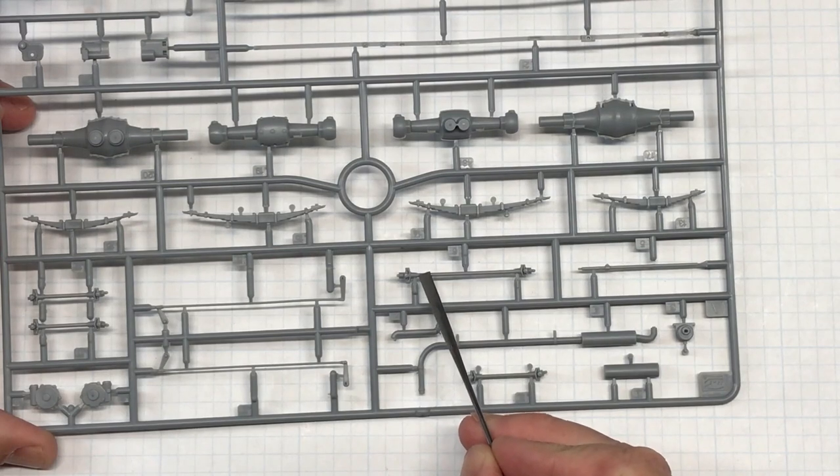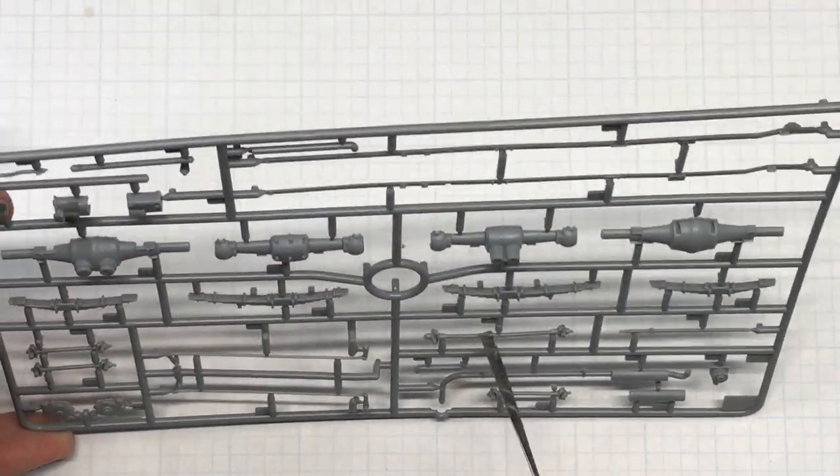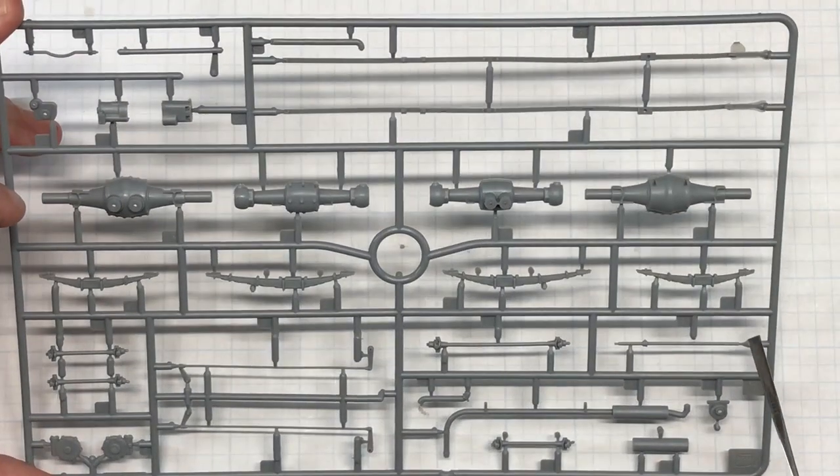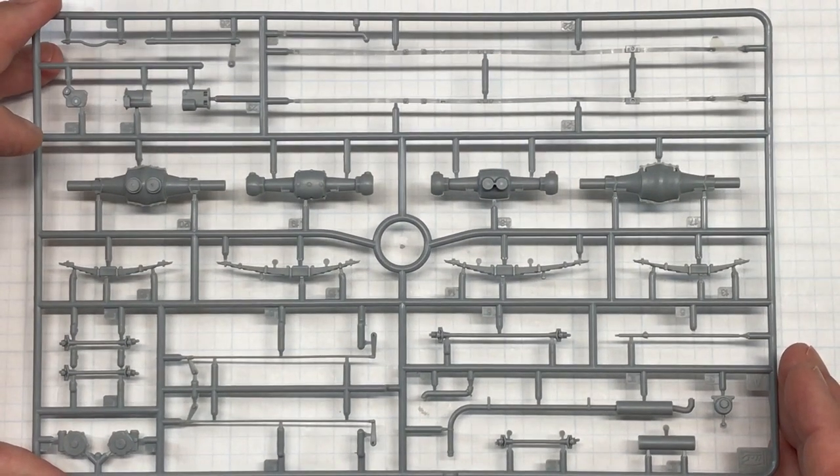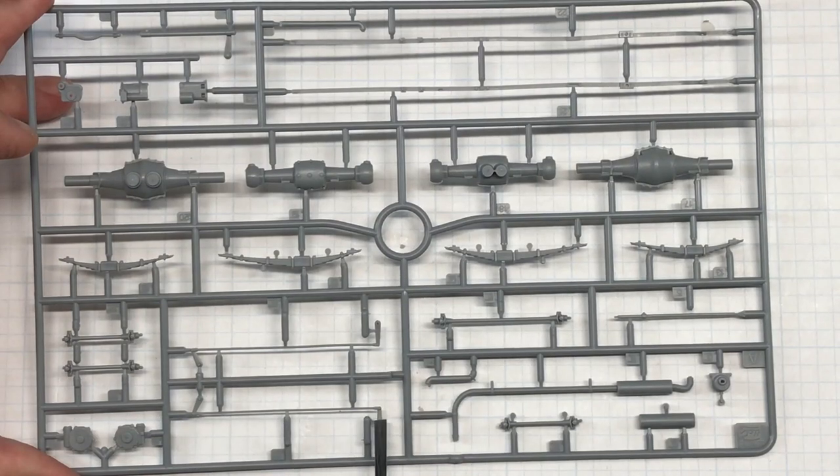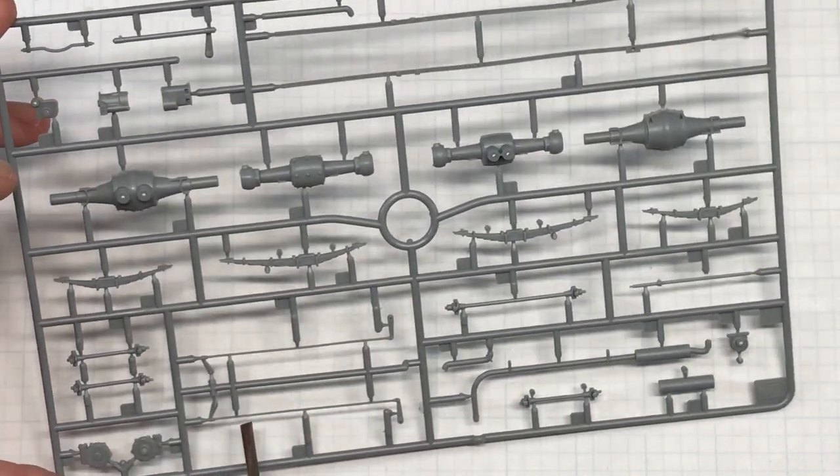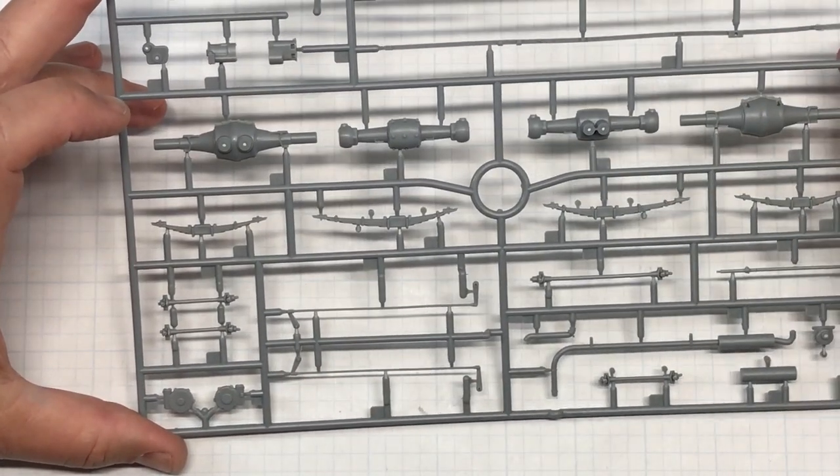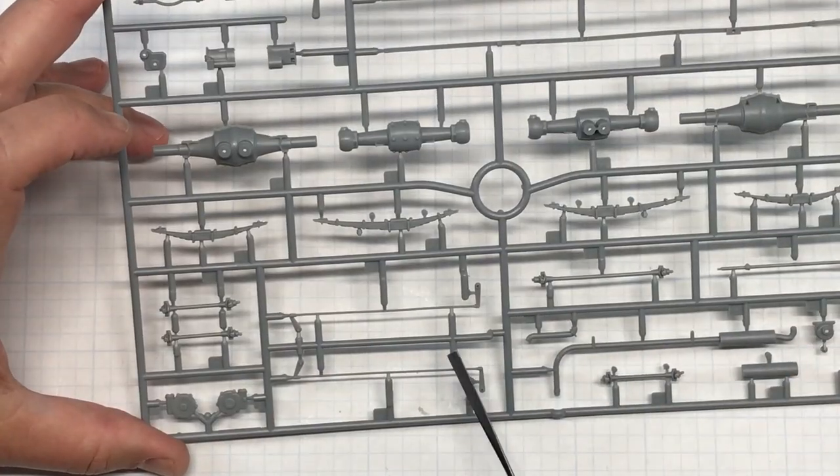These drive shafts here, the U joints. There is no flash or anything there. The molding looks really good on these parts. Apparently this company does a really good job so far with how they mold stuff. These right here, control arms or whatever they are, they are nice. The sprue gates aren't too bad. You want to definitely be careful. I don't know how brittle this plastic is. It feels like it doesn't feel like it is real brittle. Cutting those off carefully, you should not worry about breaking those.